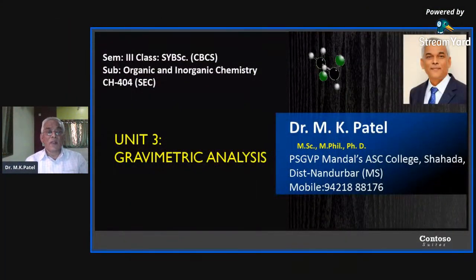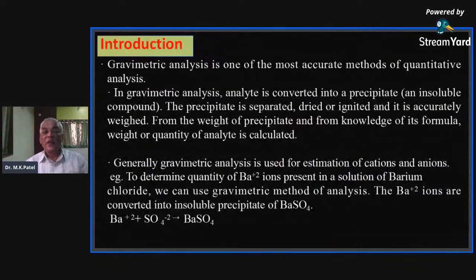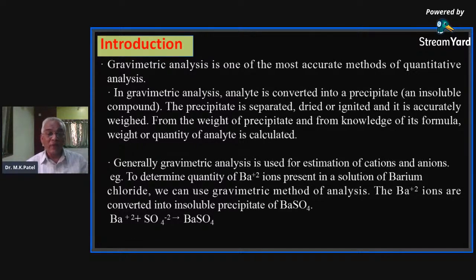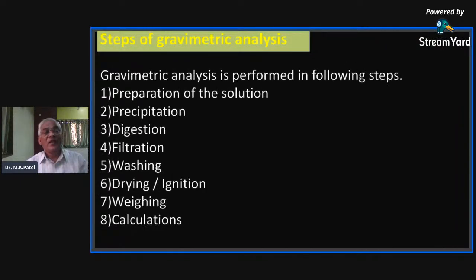With respect to gravimetric analysis, when we analyze an unknown compound, the analysis is with respect to the weight of the compound and the weight of the product. We prepare a precipitate which is insoluble, then separate it, dry it, ignite it, and accurately weigh it. From the weight of the precipitate we calculate the amount of the analyte. Examples include estimation of barium, iron, and manganese.